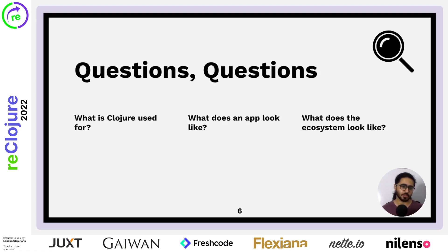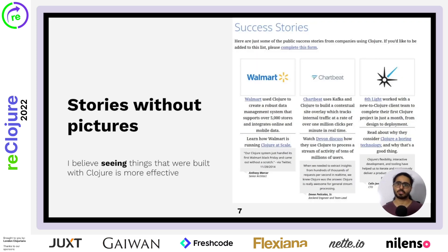So I started reading more about Clojure, having ideas and asking questions. What's Clojure used for? What does an application look like? What does the ecosystem look like? I went to the success stories webpage on Clojure.org. I was reading about how Walmart used Clojure for a robust data management system and various other tech uses. And reading, reading, reading — but there wasn't really much of seeing what Clojure did.